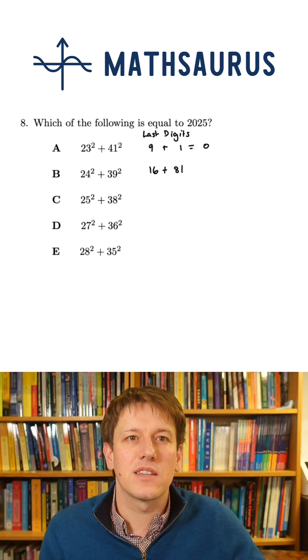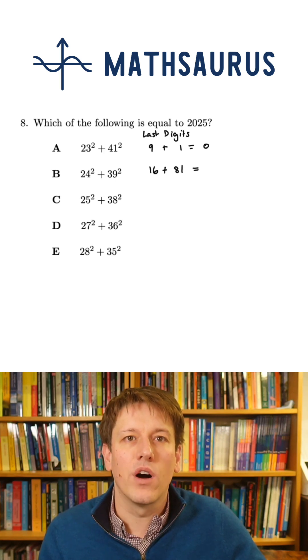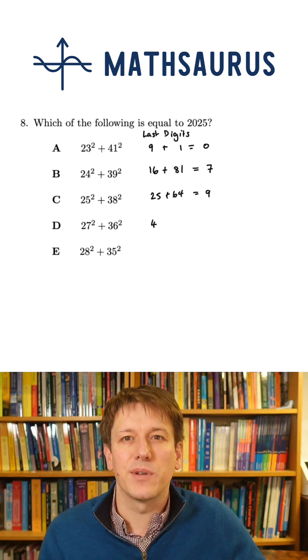For B, we'd have 4 squared is 16 and 9 squared is 81. The last digit of that is 6 plus 1, which is 7. For C, it's 5 squared and 8 squared, so that's 25 and 64. And the last digit here would be 5 plus 4, which is 9.